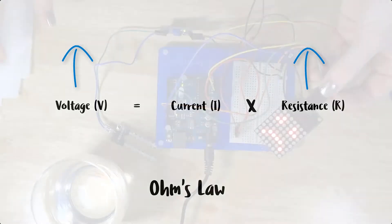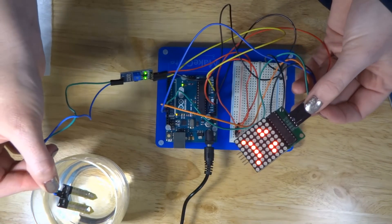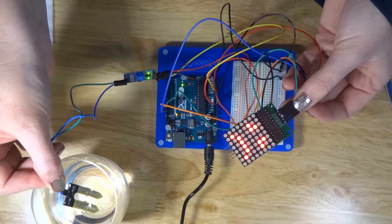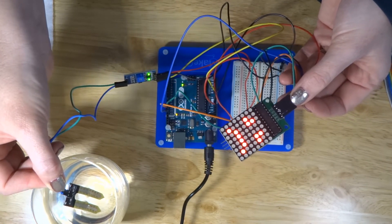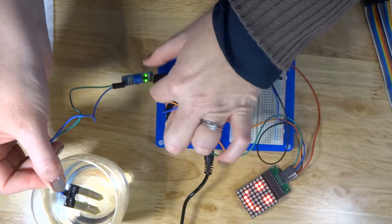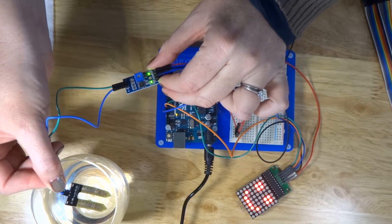When attached to a microcontroller or other device capable of measuring analog readings, this change in voltage can be monitored so you can be alerted when moisture levels are low and your plants need watering.